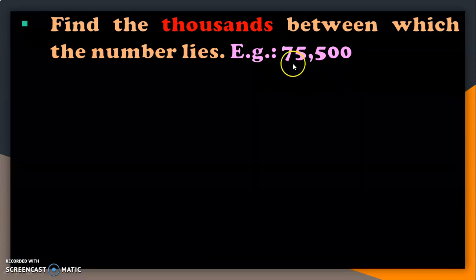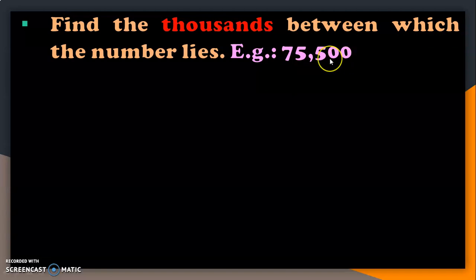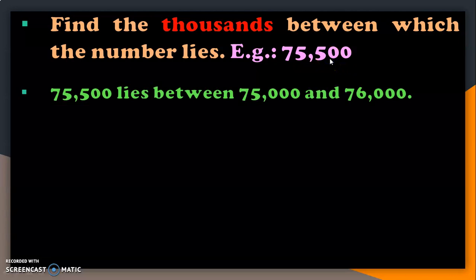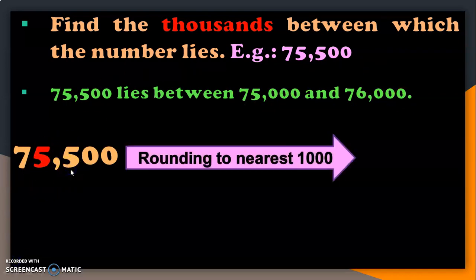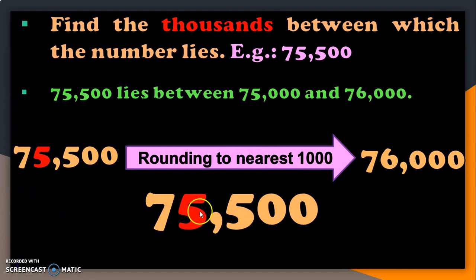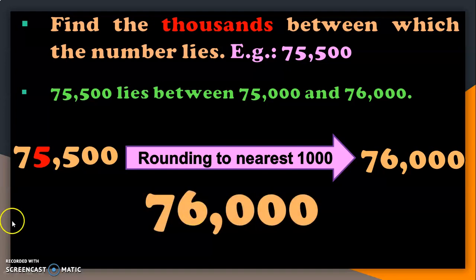Let us do another example: 75,500. The target digit in the thousands place is 5, and 5,500 lies between 5,000 and 6,000. So 75,500 lies between 75,000 and 76,000. The digit after the target is also 5, which is at the midway. So rounding to the nearest thousand gives 76,000. By the second method: make the remaining digits after the target digit 0, and since the value of the digit after the target is 5, add 1 to the target digit — the answer is 76,000.